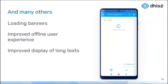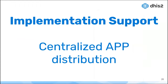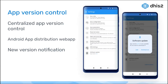That covers user experience. Now let's move to implementation support. The first thing, something very new that we are very excited to release, is centralized app distribution. We are trying to facilitate control of the version used in mobile implementations. If you don't use Google Play, you can now use your DHIS2 server to distribute APKs and control the version distributed to your users. Users connecting to your server will not get automatic updates; instead the app checks whether it is on the right version, and if not, it shows a pop-up asking the user to update — but only when your administrator decides to change the version.